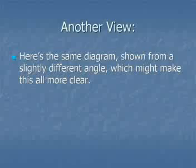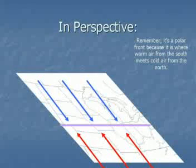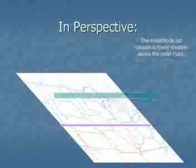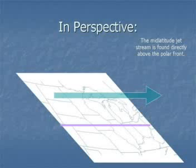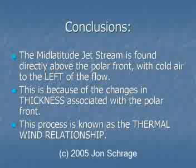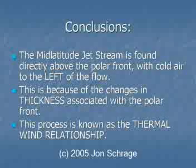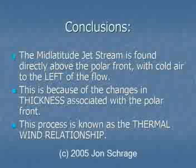Looking at the same scenario from a perspective view: the polar front is at the surface where cold air from the north meets warm air from the south, and directly above it we have strong westerly winds — the mid-latitude jet stream — due to the strong pressure gradient forces caused by the thermal wind relationship. To summarize: the mid-latitude jet stream is found directly above the polar front regardless of front type, with cold air to the left of the flow and the general flow from the west. This occurs because of thickness changes across the polar front, known as the thermal wind relationship — or more precisely, the thermal wind equation, covered in ATS 572.